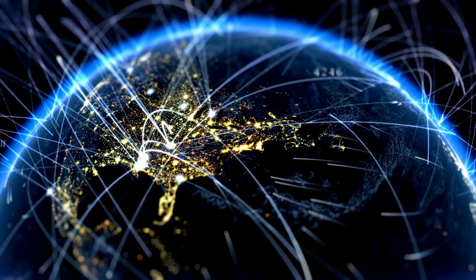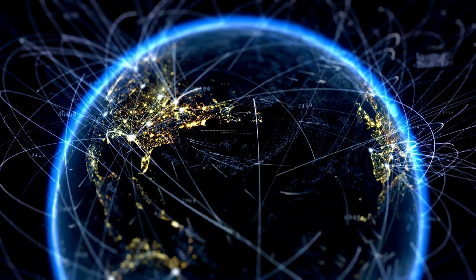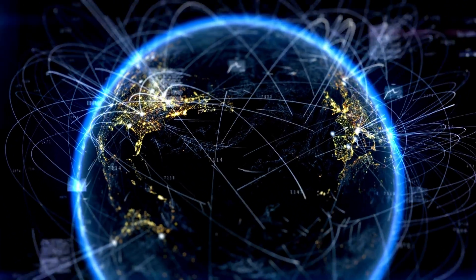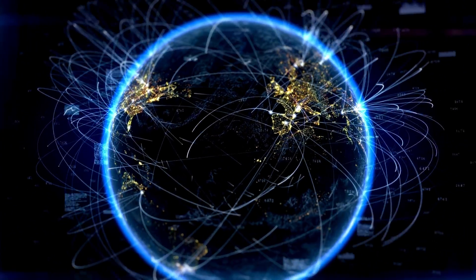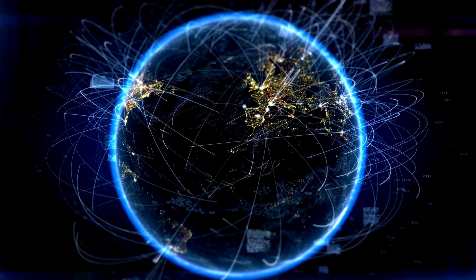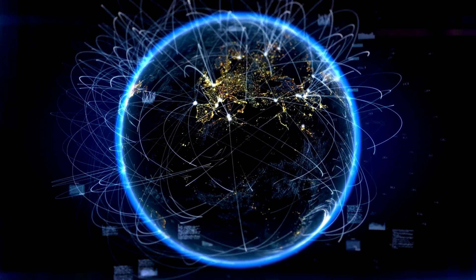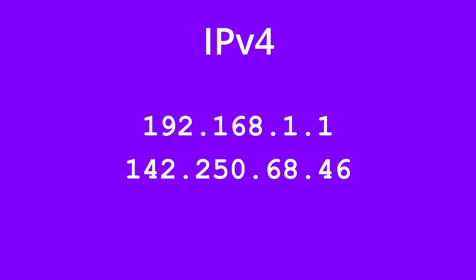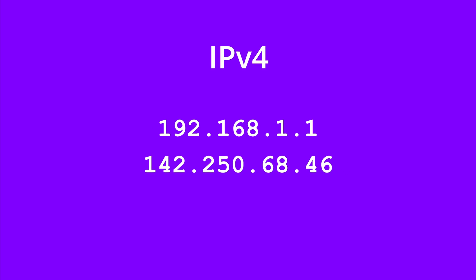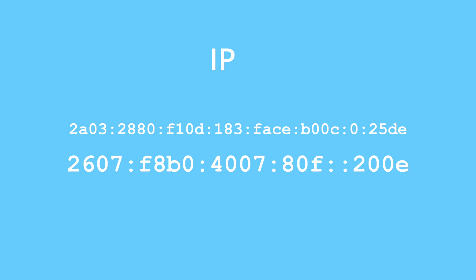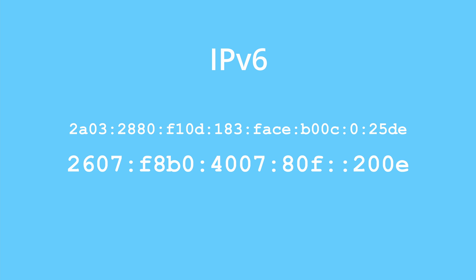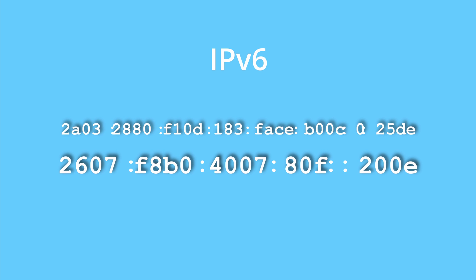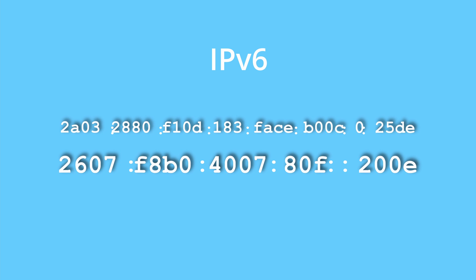Regardless, there is still certainly a need to increase the number of IP addresses available, and that is what IP version 6 aims to do. As you know by now, this is what an IP version 4 address looks like, and this is what an IP version 6 address looks like. IPv6 addresses are made up of 8 groups of hexadecimal digits separated by colons.